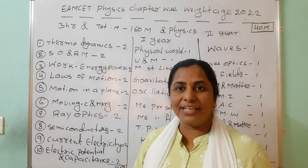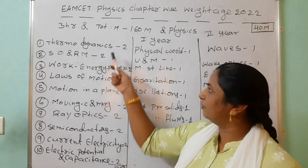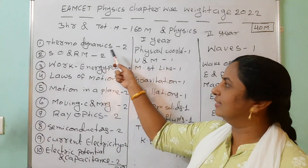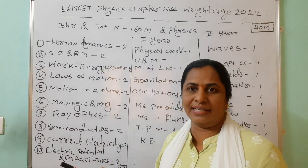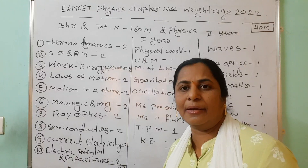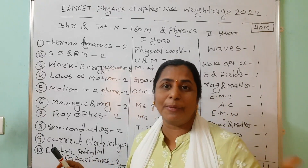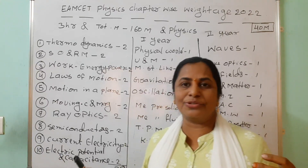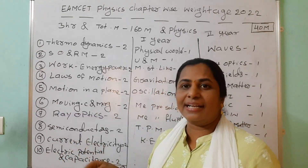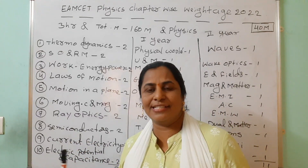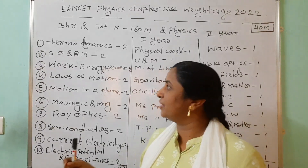From the physics side, we are expecting two questions from each of these chapters. For thermodynamics it belongs to heat. In system of particles and rotational motion, center of mass is there, cross product is there — parallel axis theorem and perpendicular axis theorem have been removed from the syllabus, so now it is very easy to prepare this chapter. You should focus on cross product and center of mass. In another video I am giving chapter-wise what are the important topics and what you should stress on.